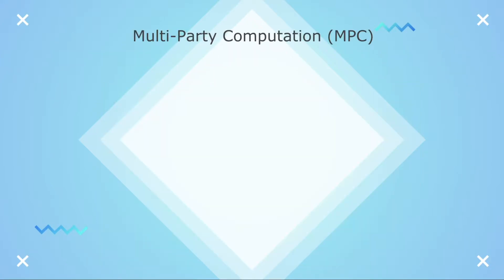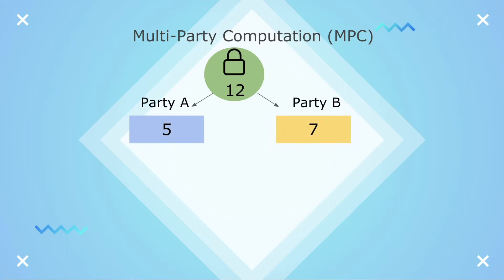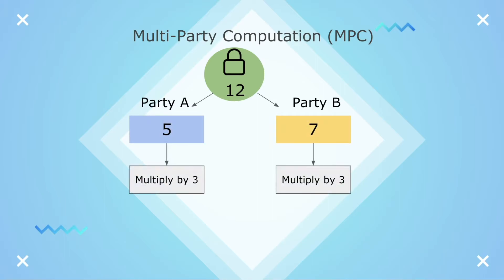Here's a simplified example of how MPC works. Let's say the original data were the number 12. Krypton would divide it between two parties into the numbers 5 and 7. Each party would perform the same function — multiplying the input by 3 in this example — giving them their own outputs of 15 and 21.